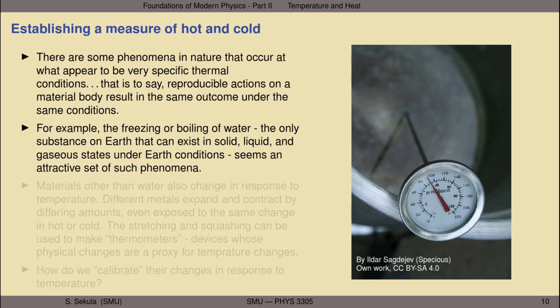The only substance on earth that can exist in solid, liquid, and gaseous states under earth conditions is water. It is essential to life as we know it. And because it is able to co-exist under a very narrow range of conditions as either a liquid, a solid, or a gas, it makes an attractive phenomenon on which to establish a range of behaviors that can be used to delineate a scale of temperature measure.